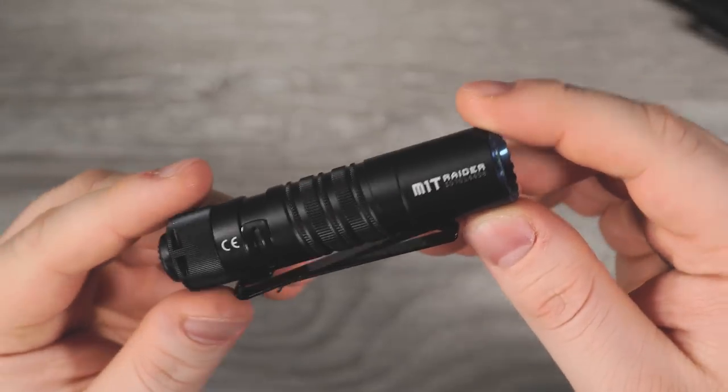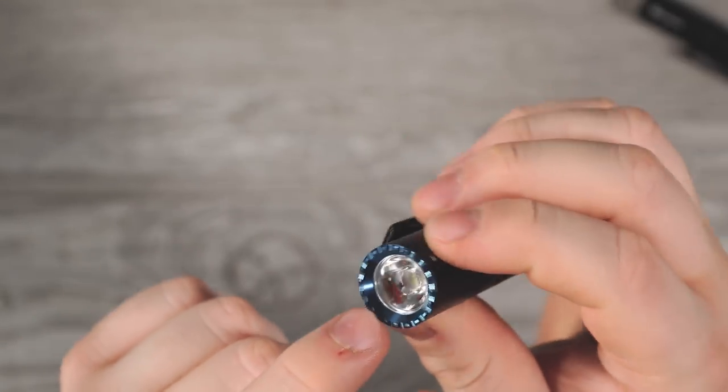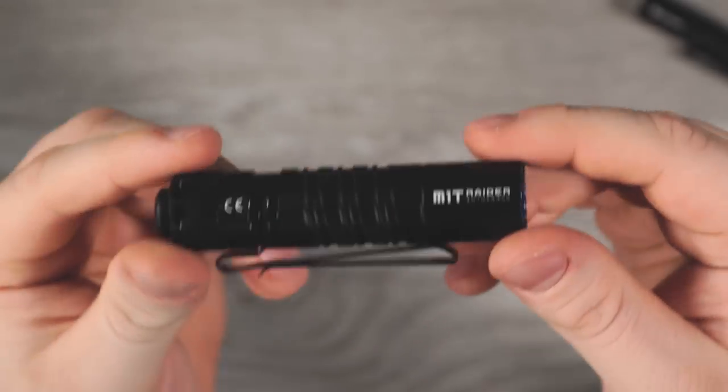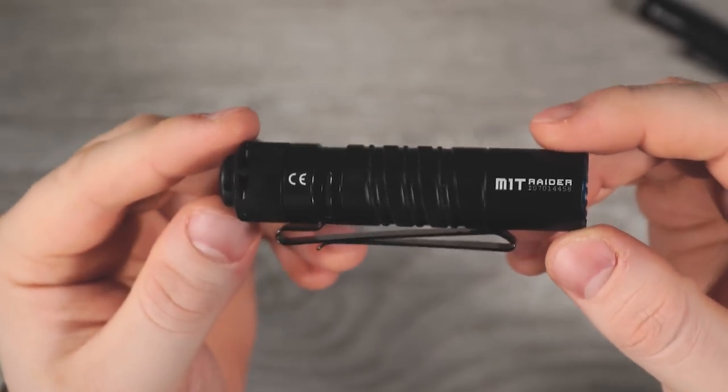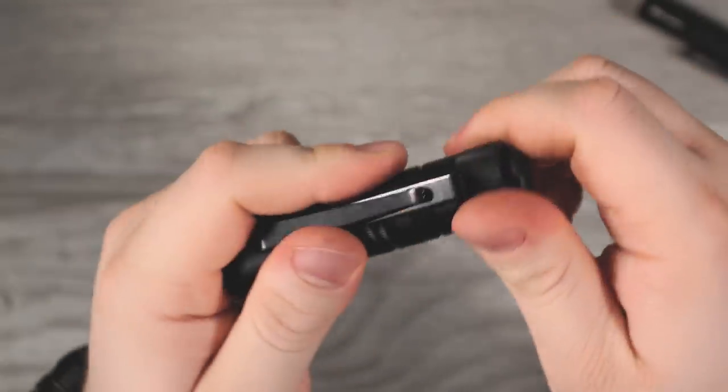So the M1T Raider is much beefier than the i3T and it's a little more tactical. It's got this blue crenulated bezel, the vertical lines through the double helix, and it's just got a little more tactical look to it. It's a little bigger, beefier, with a longer run time and a brighter light.